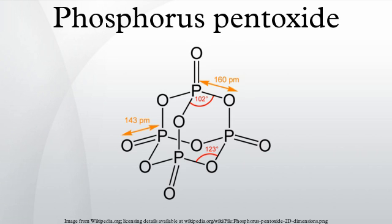The metastable orthorhombic form adopts a layered structure consisting of interconnected P6O6 rings, not unlike the structure adopted by certain polysilicates. The stable form is a higher density phase, also orthorhombic — the so-called O form — consisting of a three-dimensional framework with a density of 3.5 g per cm³.